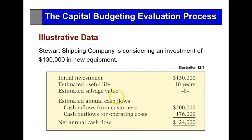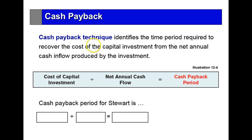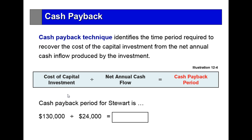Stewart Shipping Company is considering an investment of $130,000 in new equipment. They expect it to last for 10 years. From the inflows from customers and the outflows from operating costs, they come up with an annual net cash flow. This method — called the cash payback — helps identify the time period to recover the $130,000. We take the $130,000 and divide it by the $24,000 net cash increase.